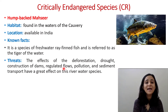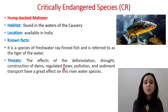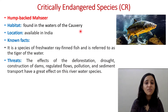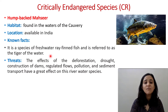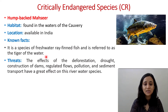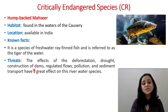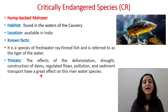Next is the Humpbacked Mahseer, also under Critically Endangered. Its habitat is found in the waters of the Kaveri River, located in India. It is a species of freshwater fish and is referred to as the 'tiger of the water.' Threats include deforestation, drought, construction of dams, regulated flows, pollution, and sediment transport.